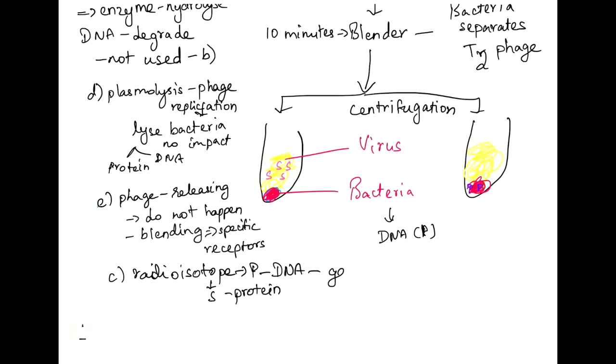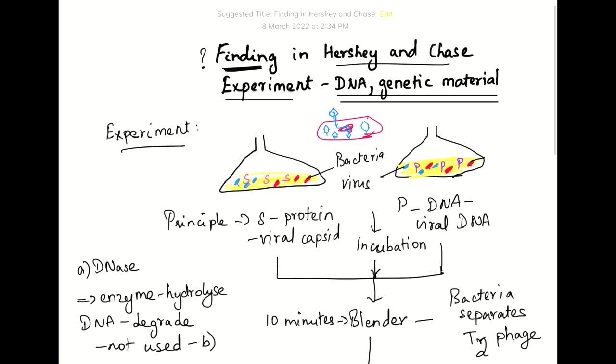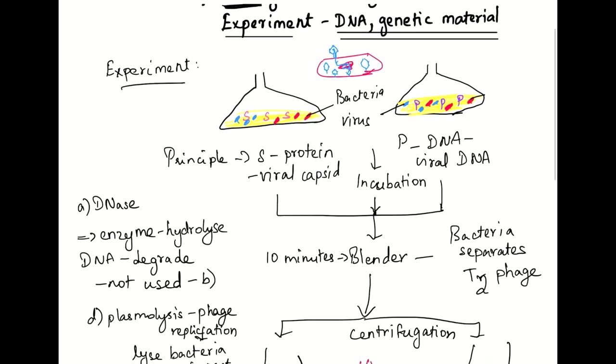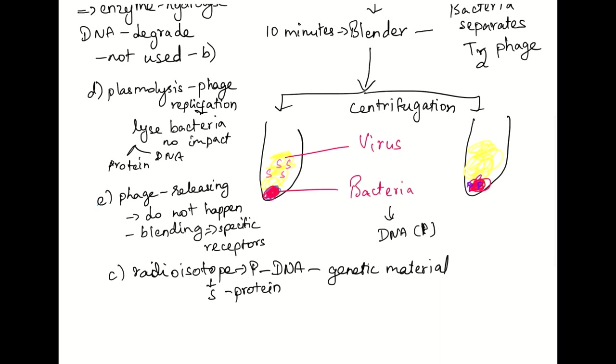So thus in today's topic we discussed what in Hershey and Chase experiment finding led us to conclude DNA as the genetic material. We found that the use of radioisotope phosphorus and sulfur showed that DNA is the genetic material.